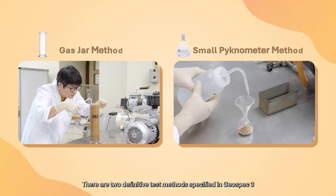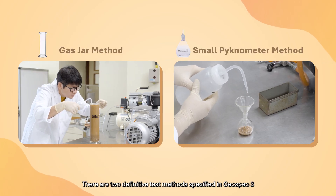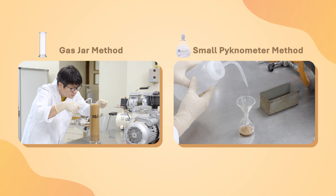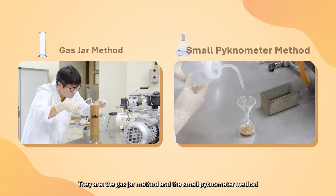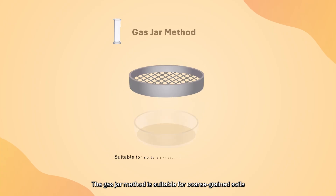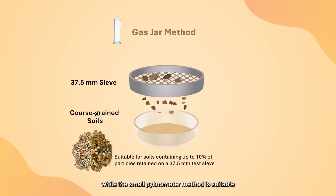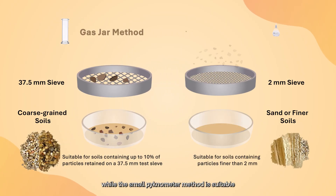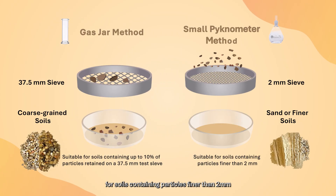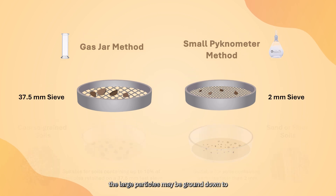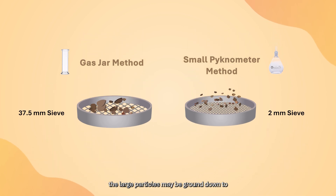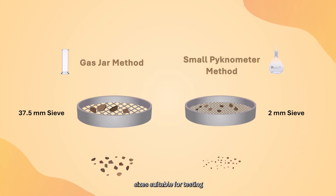There are two definitive test methods specified in GeoSpec 3: the gas jar method and the small pycnometer method. The gas jar method is suitable for coarse-grained soils, while the small pycnometer method is suitable for soils containing particles finer than 2 millimeters, which are sand or finer material. If the soil contains coarse particles, the large particles may be ground down to sizes suitable for testing.